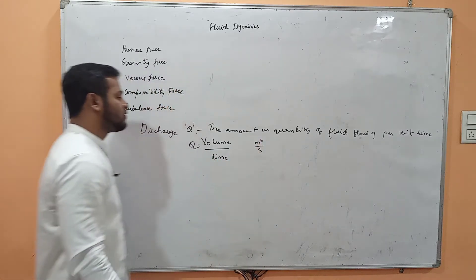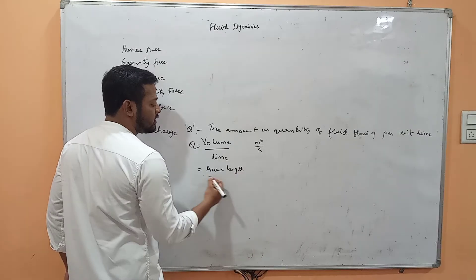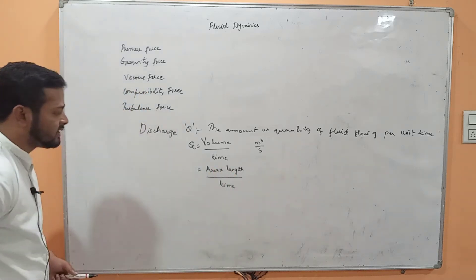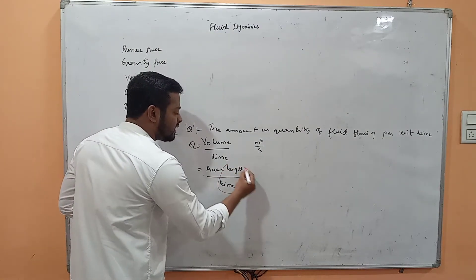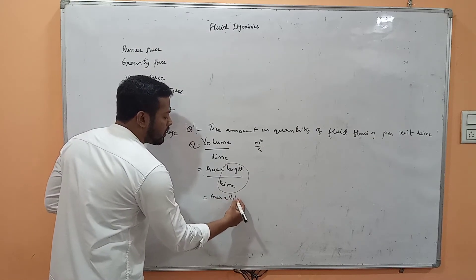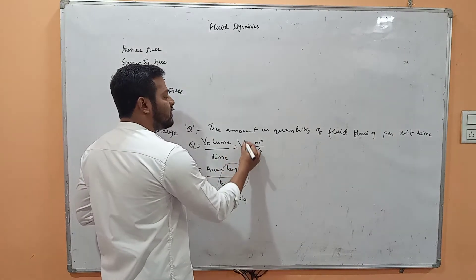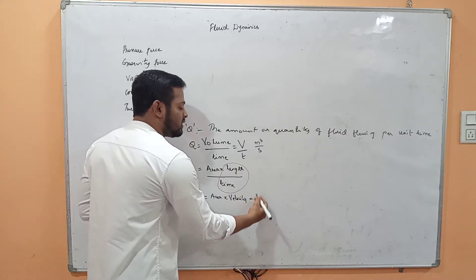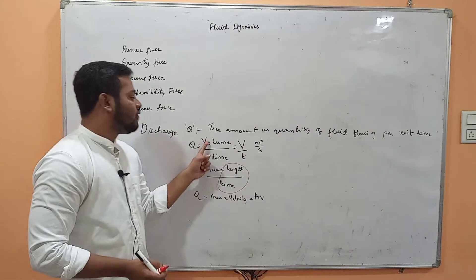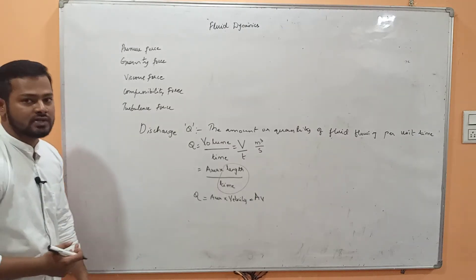Volume can be written as area into length, so volume by time becomes area into length by time. Length per unit time is velocity, so discharge is also equal to area into velocity. We have two formulas for discharge: Q = V/t (where V is volume) or Q = A × v (where A is area and v is velocity). Both formulas represent discharge.